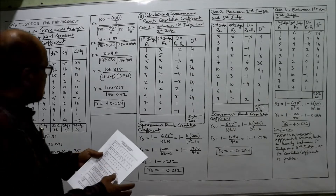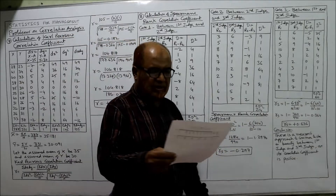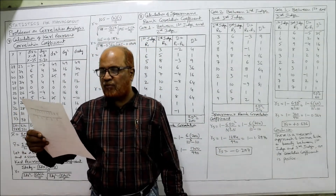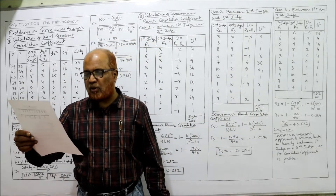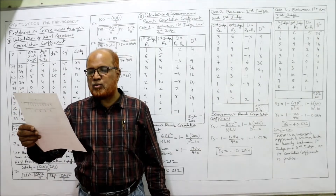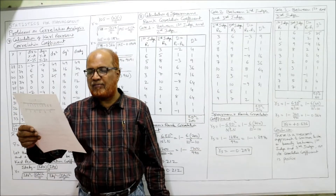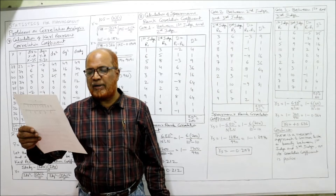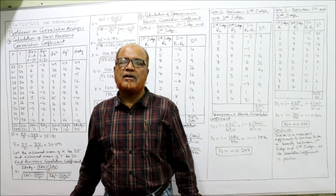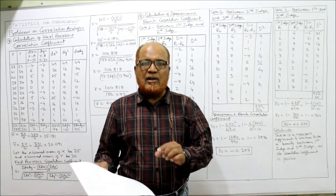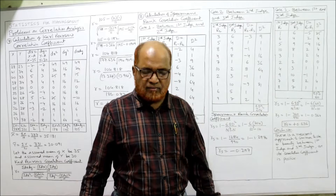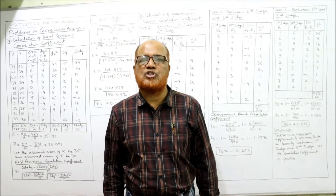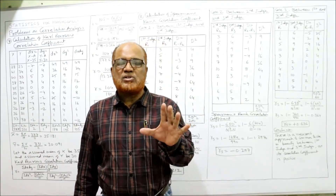See problem number seven: calculate Carl Pearson's correlation coefficient from the following data. The x values are given as 28, 41, 40, 38, and so on, and the y values are given as 23, 34, 33, 30, and so on. Values of the x series and y series are given; we have to calculate Carl Pearson's correlation coefficient.